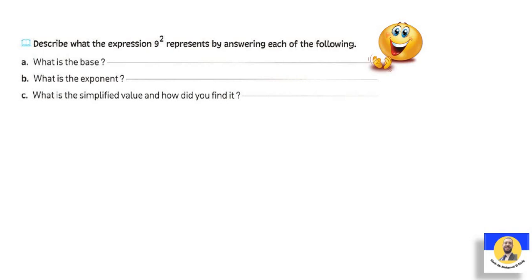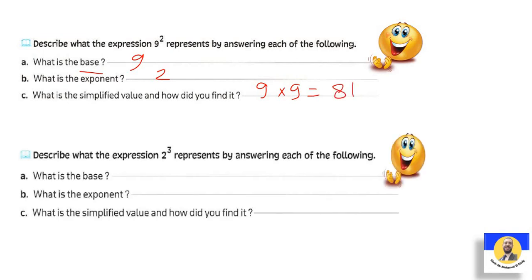Describe what the expression 9² represents. What is the base? الـBase هو 9، اللي هو الـNumber اللي بيحصله Repeat. What is the exponent? الـExponent هي 2، يعني بيحصله Repeat 2 times. What is the simplified form and how did you find it? 9 × 9 = 81. And for 2³: Base = 2، Exponent = 3، 2×2×2 = 8.